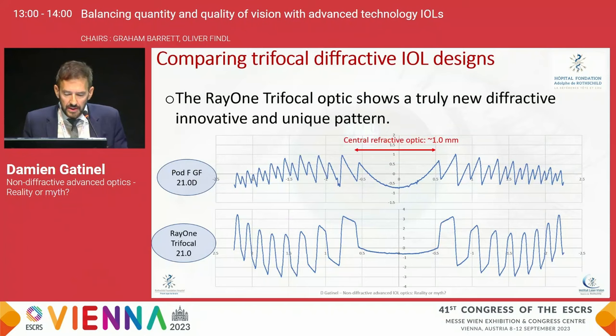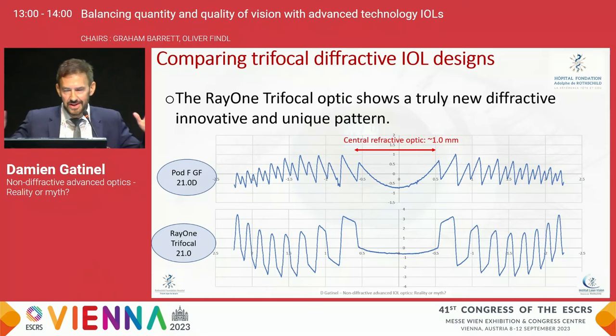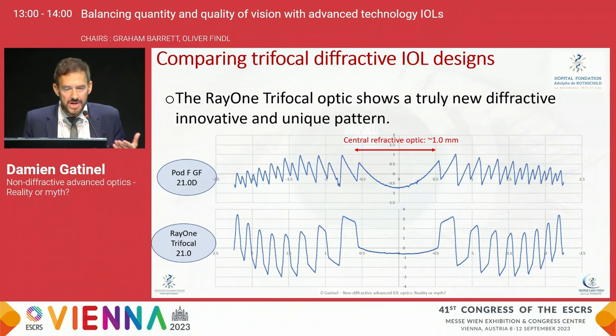From the optical properties, you can derive the profiles of the diffractive element — these show just the diffractive structure extracted from the base curve of the lenses. You see here two lenses: a very beautiful one, the PodFGF FineVision, with a kind of Christmas tree design, and another, arguably as nice, more like a castle battlement — the Rayner trifocal element. But regardless of aesthetic preference, they are completely different mechanisms.